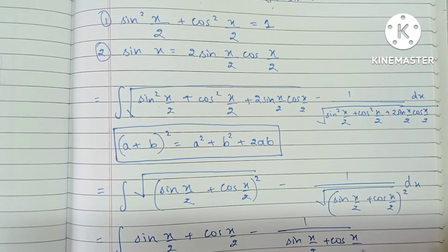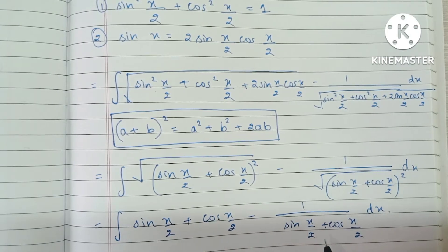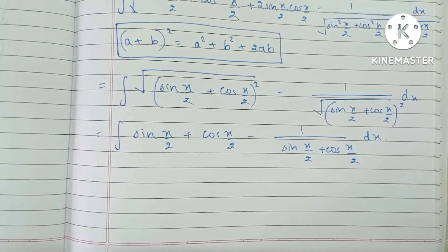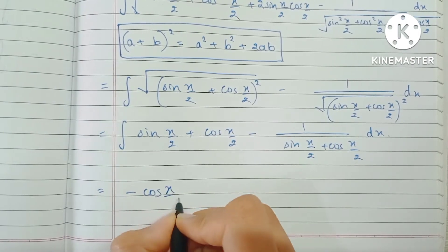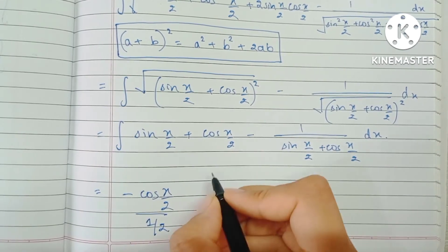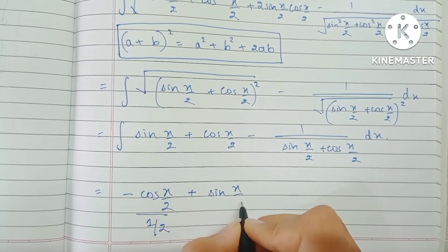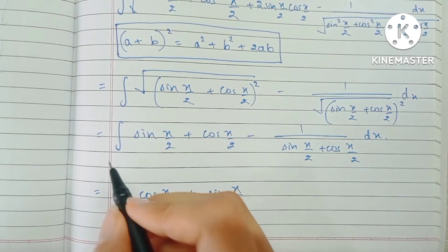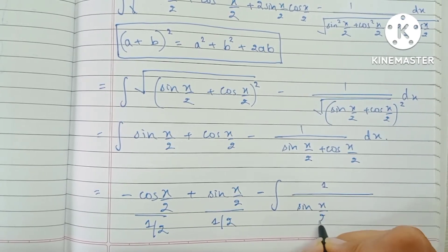The first two terms can be integrated using direct formulas. The integral of sin(x/2) is minus cos(x/2) divided by the coefficient of x, which is 1/2. The integral of cos(x/2) is sin(x/2) upon 1/2. We bring the minus sign outside the integral and are left with the integral of 1 upon (sin(x/2) + cos(x/2)).